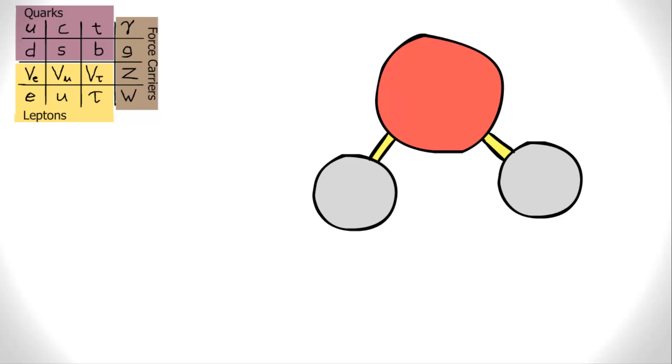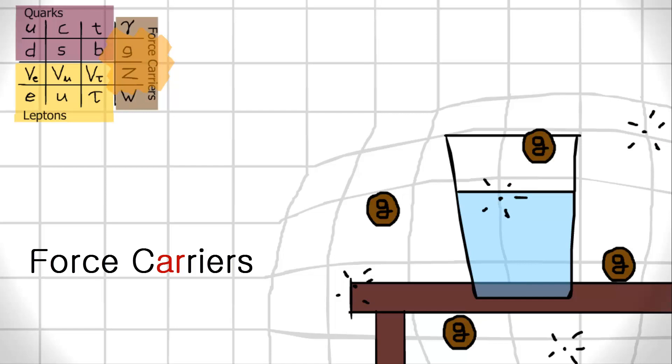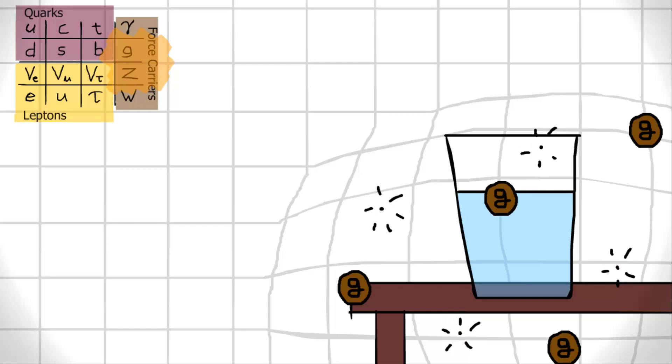Quarks and leptons are the elementary particles which make up an atom and its characteristics. Think of them as the building blocks of matter. Force carriers are the gauge bosons that measure energy and mass. They are the particles that the quarks release so that various elementary particles can interact with each other.